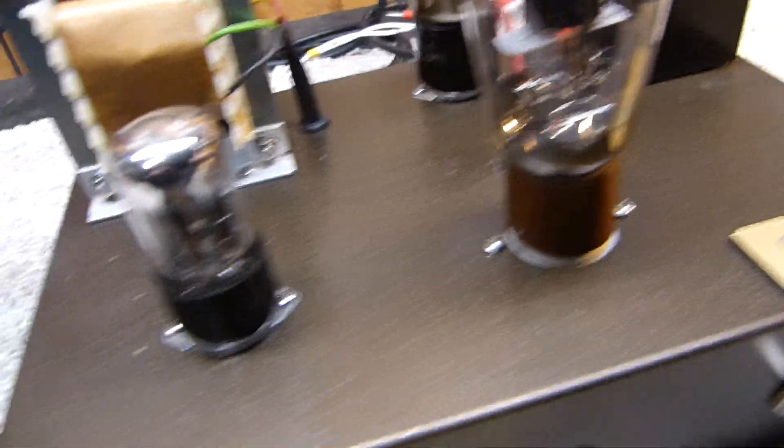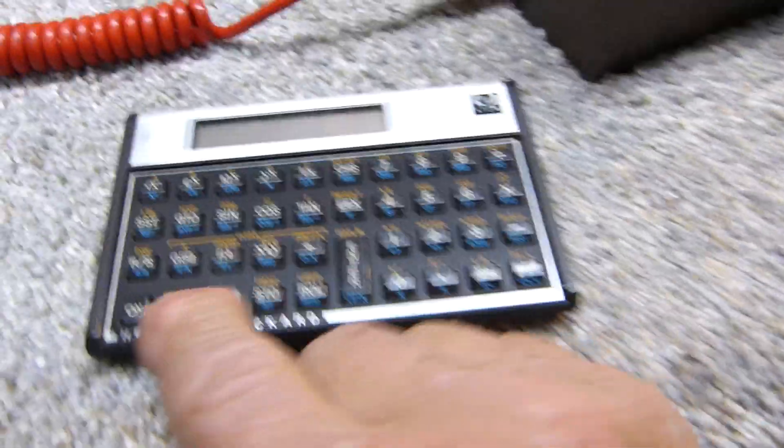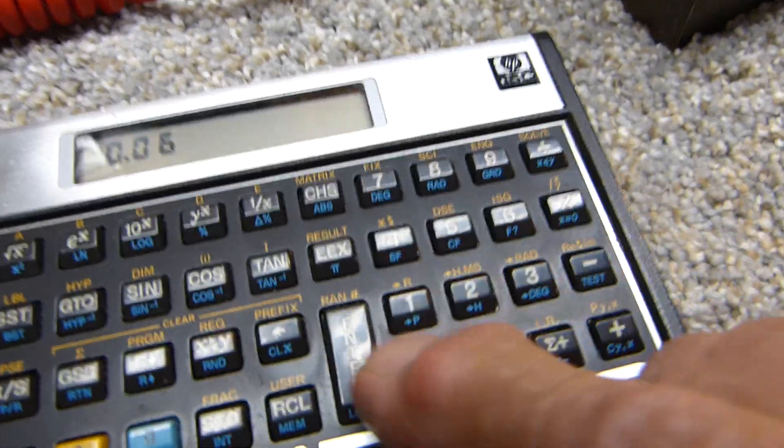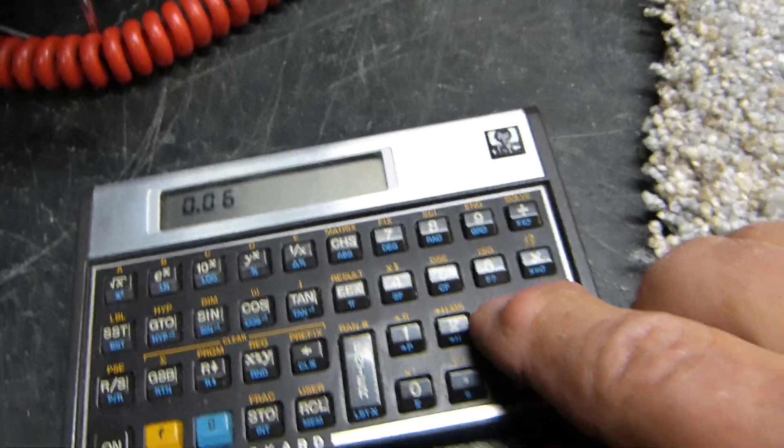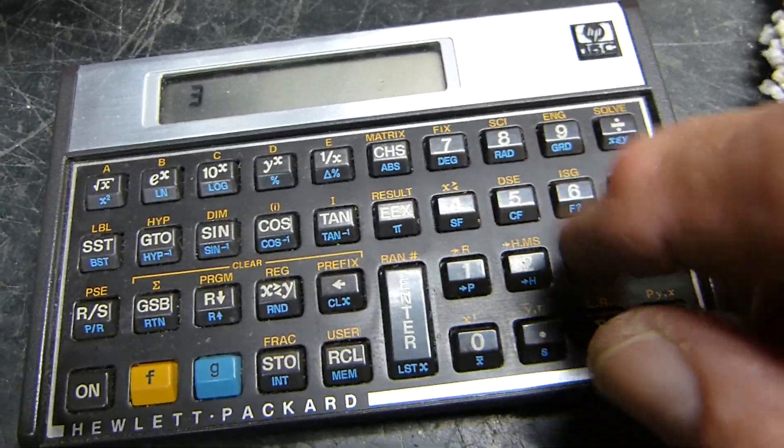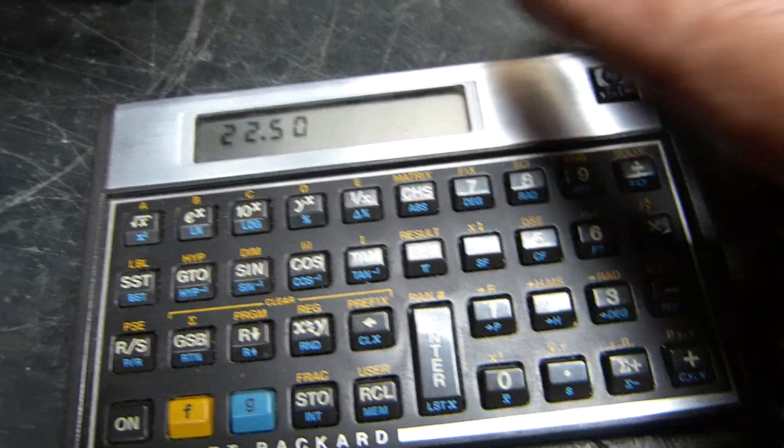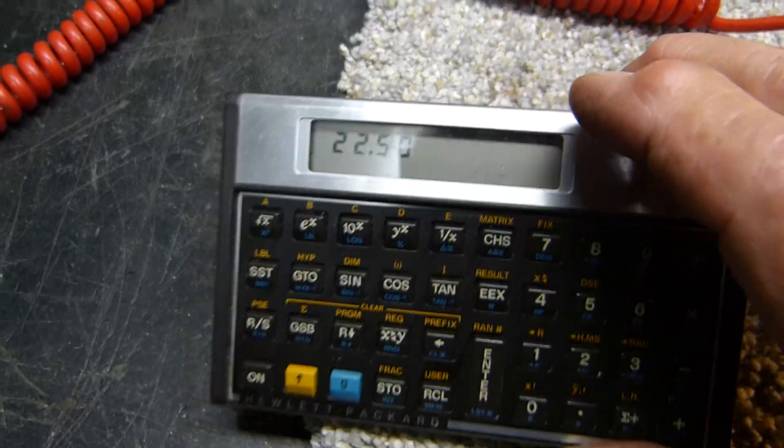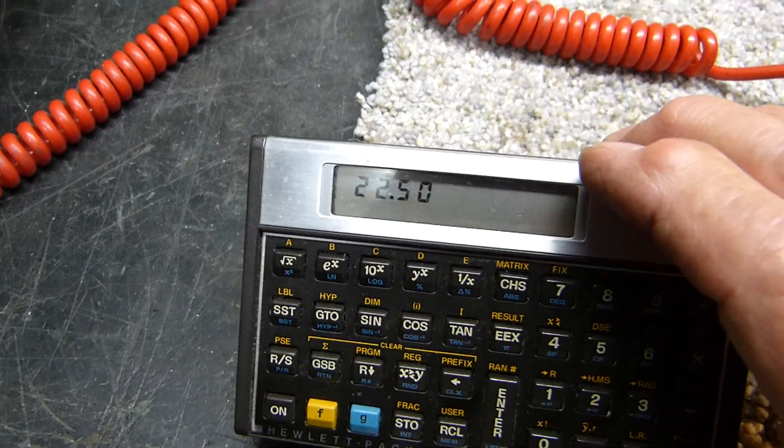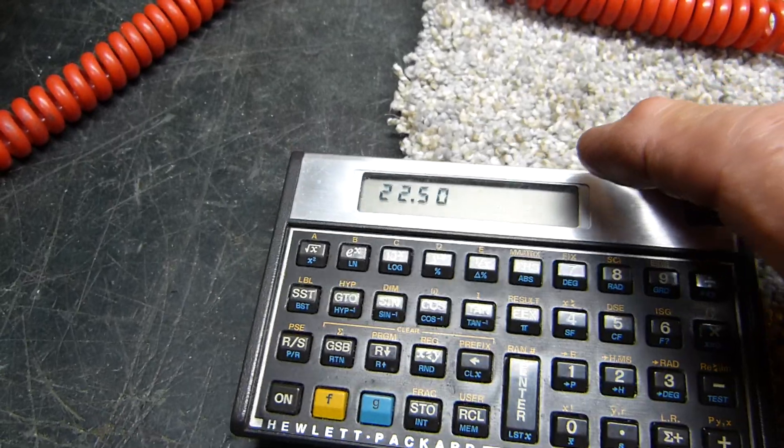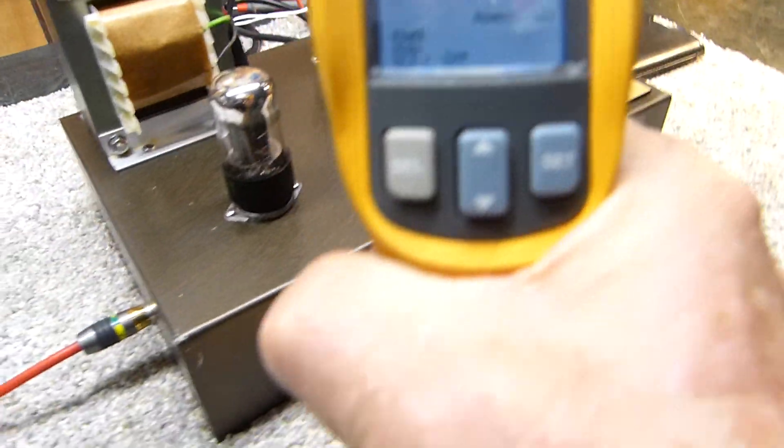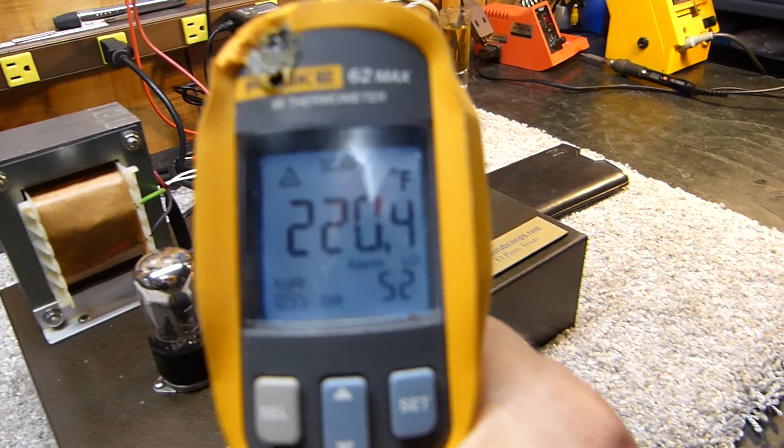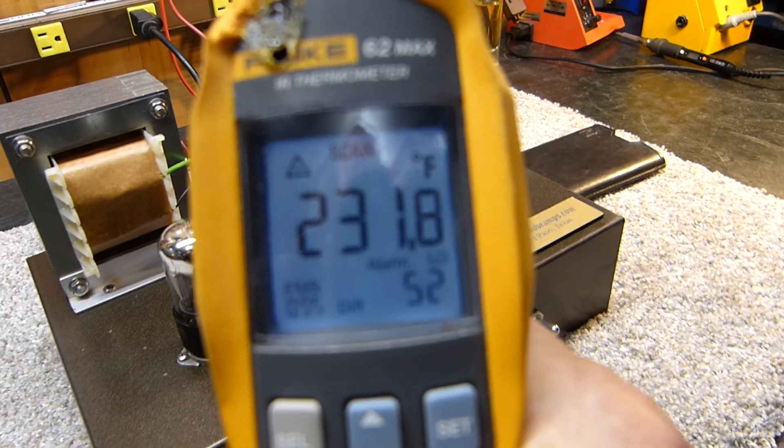If you do 60 milliamps at 375 volts, that gives me 22 and a half watts of plate dissipation. I think the maximum is 30, so I like to keep it up there but it's not very hot. You can actually see the temperature right here, it's been on for a while - 230, 240 degrees. That's pretty normal.